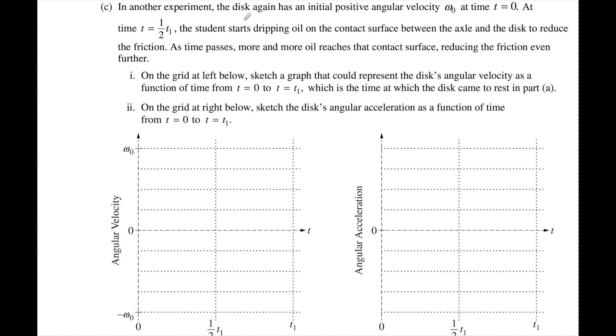Looks like we get to sketch some more graphs. In another experiment, the disc has an initial velocity. So we have some positive omega that's going to start as well. The students start dripping oil on the contact surface to reduce friction. As time passes, more and more oil reaches the contact surface, reducing the friction even further. But they start doing that at time one-half. So this is where we're going to have some oil that's going to reduce the force of friction.